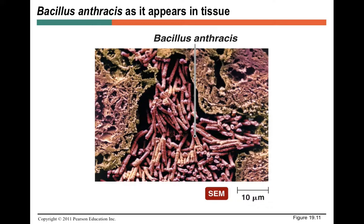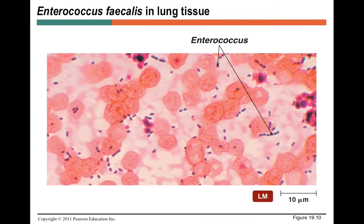That covers pretty much the gram-positive cocci you'll need to know for this unit. Micrococci is also listed — it's not really considered a pathogen for humans unless something unusual is going on; it can be an opportunistic pathogen. We use micrococci in labs, so it's worth being aware of. But these are the main pathogens in the gram-positive cocci gram morphology.